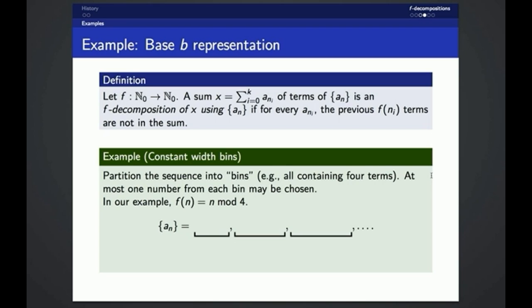If we pick the term with index 5, we have no restrictions because it's the first term in its bin. So we see that F of n equals n mod 4 in this case.